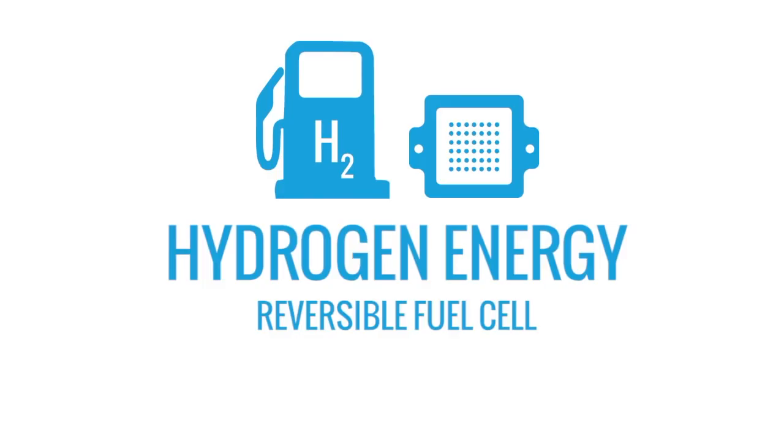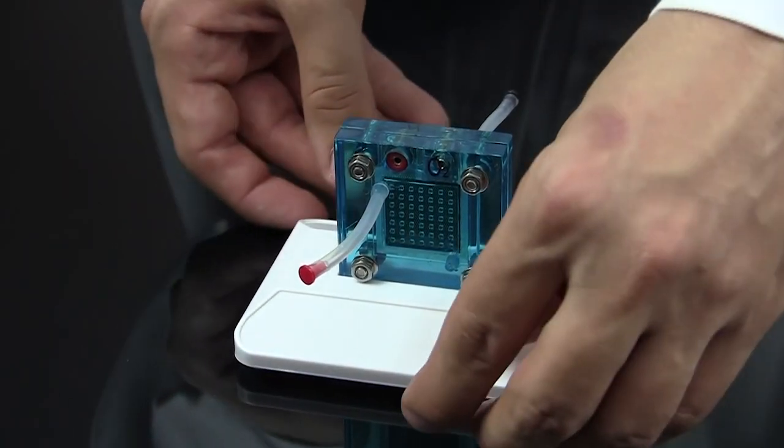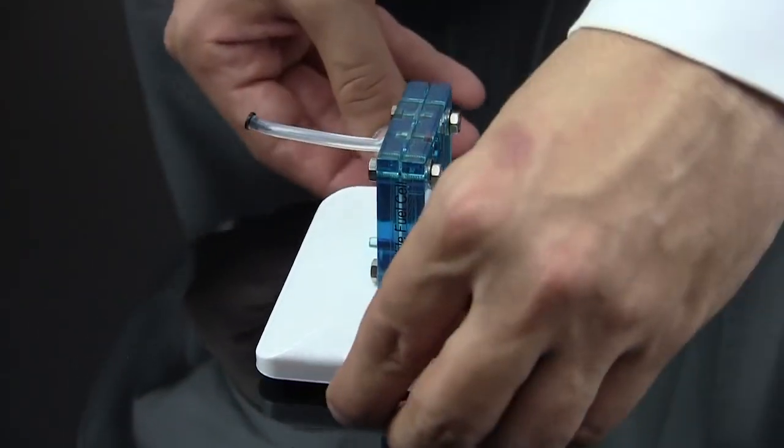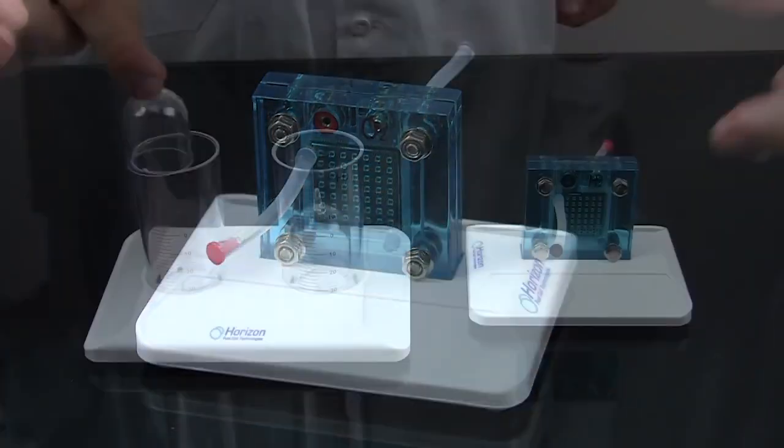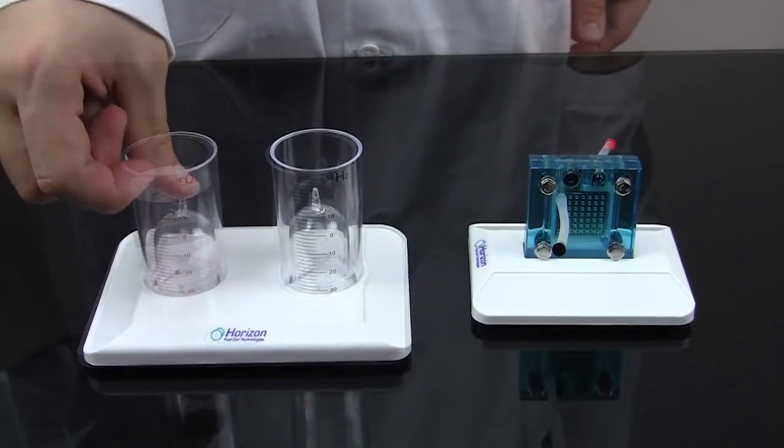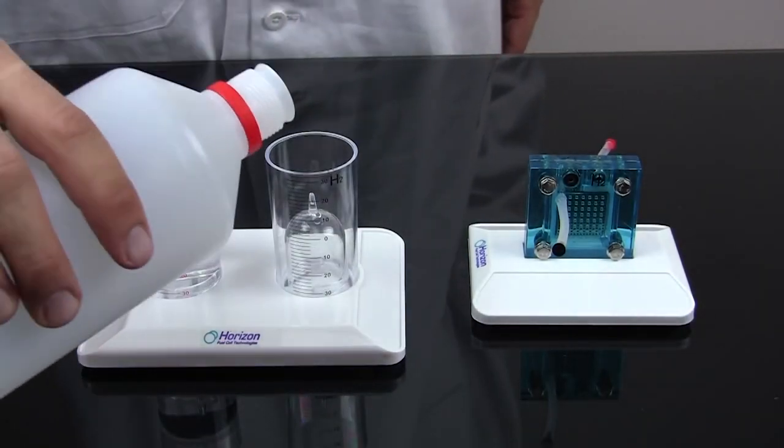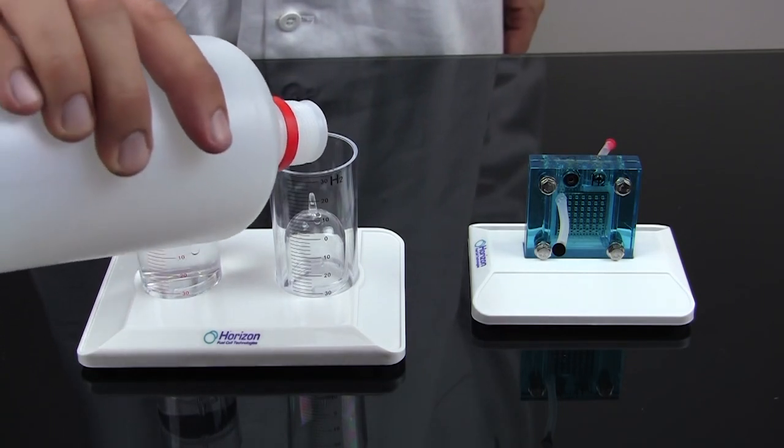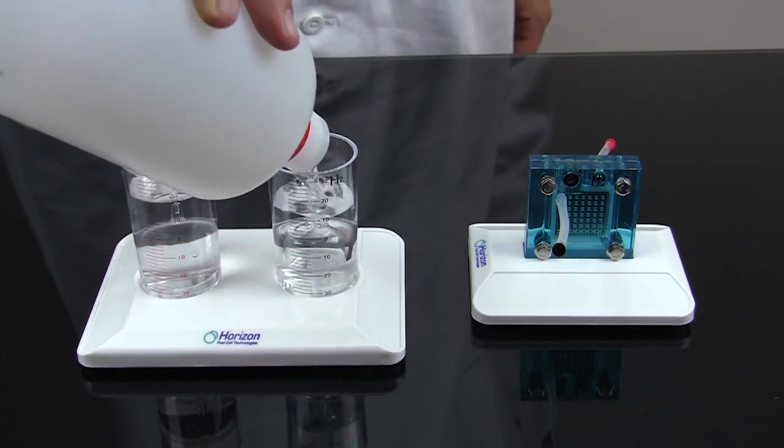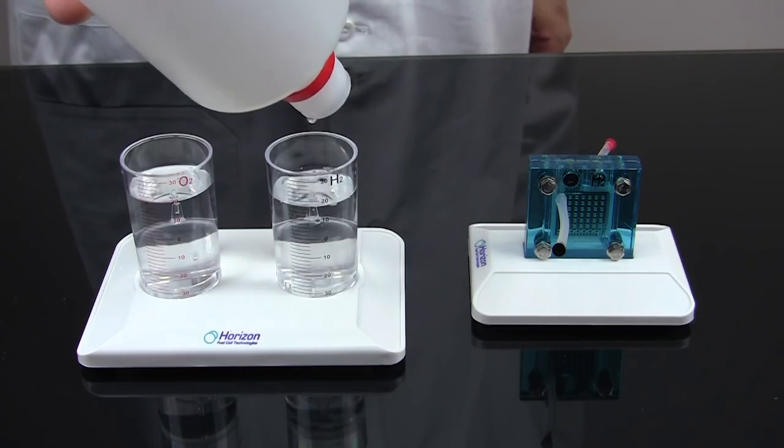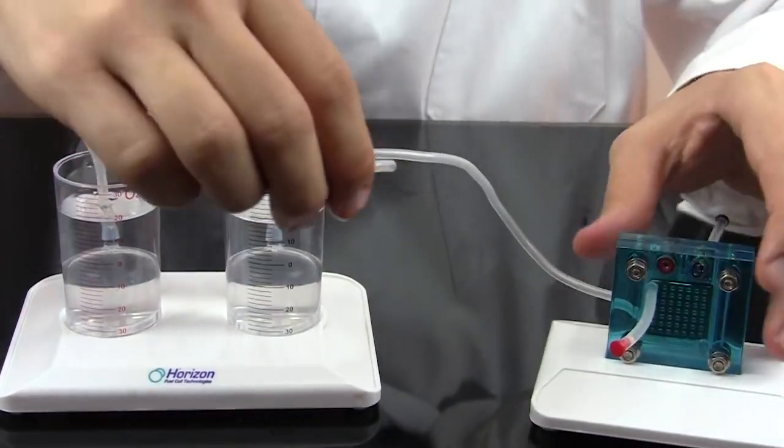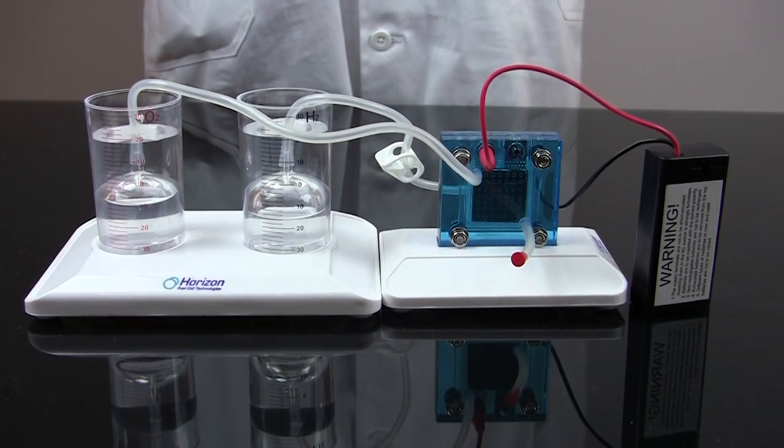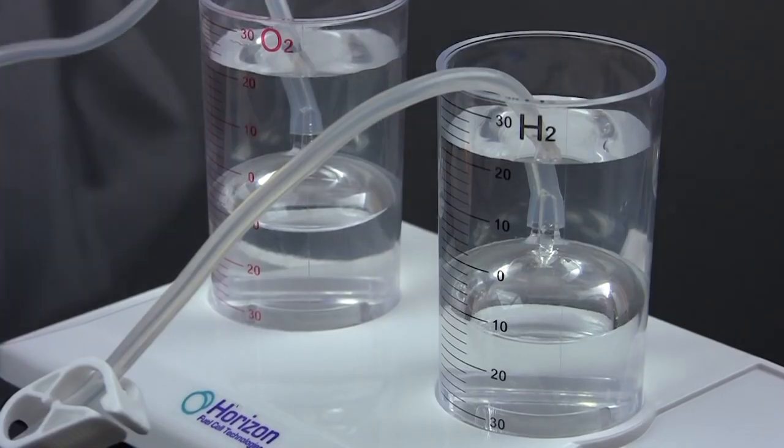A reversible hydrogen fuel cell lets students generate hydrogen gas from water, then use it as a fuel to produce an electric current. Simply fill the oxygen side of the fuel cell with distilled water using the syringe. Then fill the oxygen and hydrogen cylinders with distilled water as well. Connect the fuel cell and cylinders with lengths of tubing and connect the fuel cell to the battery pack. Then watch as hydrogen and oxygen gas begin filling the cylinders.